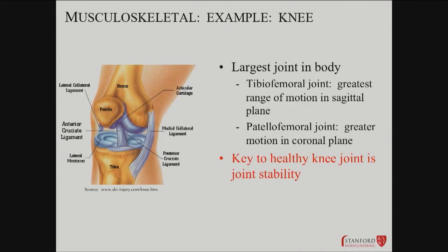Everything depends on the kind of use expected. The knee is the most abused joint. It has a lot of pressure on it, due to its recently acquired vulnerability in evolution. It bears a lot of weight relative to what it does in other closely related species.